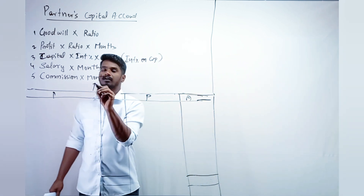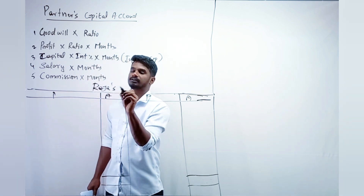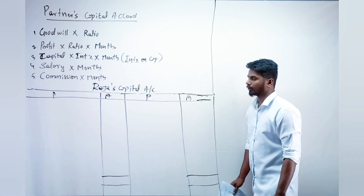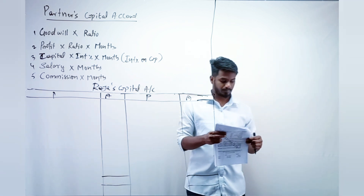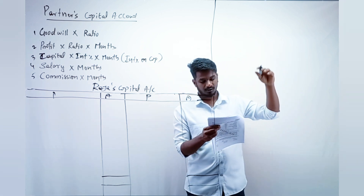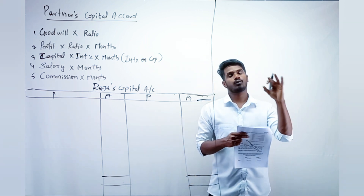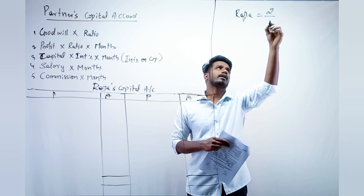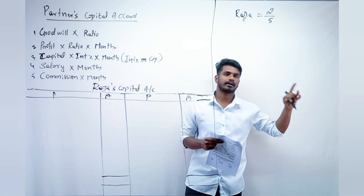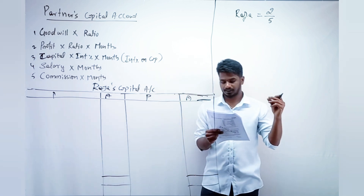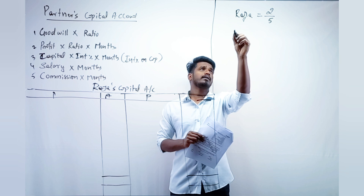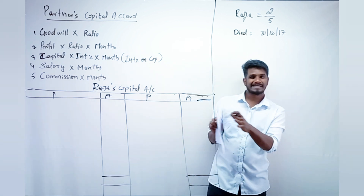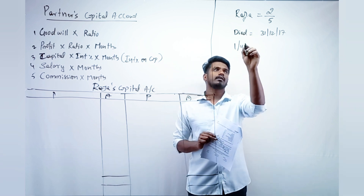Raja, Rani, and Mantri are sharing profit and losses in the ratio 2:2:1. Raja's ratio is 2 divided by 5 — the total comes from 2 plus 2 plus 1 equals 5. Raja died on 31st December 2017, and the financial year starts on 1st April 2017.